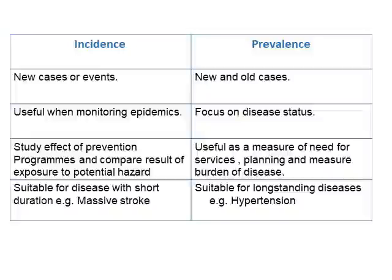Here is a simple comparison between incidence and prevalence. Incidence, as we said, is for new cases or events, while prevalence covers both new and old cases. Incidence is most useful in epidemic situations — when a new disease suddenly appears in large numbers, we use incidence to track new appearances. Prevalence focuses more on existing cases of a disease that has been present for a period, so we use prevalence rather than incidence for established diseases.